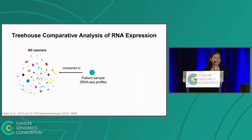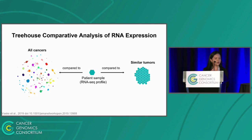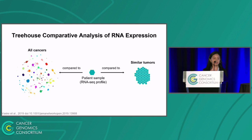For identifying outliers, we start with an RNA sequencing profile from a single patient, as represented by the hexagon in the center. We compare that profile against a cohort comprising the entire tumor compendia on the left, which consists of all cancers, but we also compare against a cohort of similar tumors on the right. This cohort includes samples from the compendia that we believe to be histologically similar — meaning they are labeled with the same disease as your patient — but also samples that we define to be transcriptionally similar. It's using this method of CARE that we decided to assess the feasibility and utility of incorporating RNA expression into the clinic.